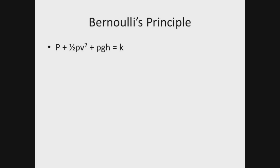Here's the equation. P, the static pressure, plus one-half rho v squared, the dynamic pressure — and that's not a lowercase p, it's the Greek letter rho, which stands for density. When talking about Bernoulli's, we mean the density of the fluid — plus rho g h equals a constant.